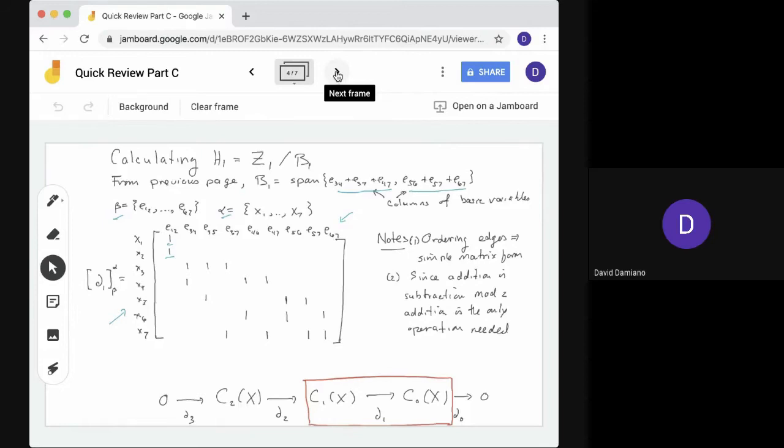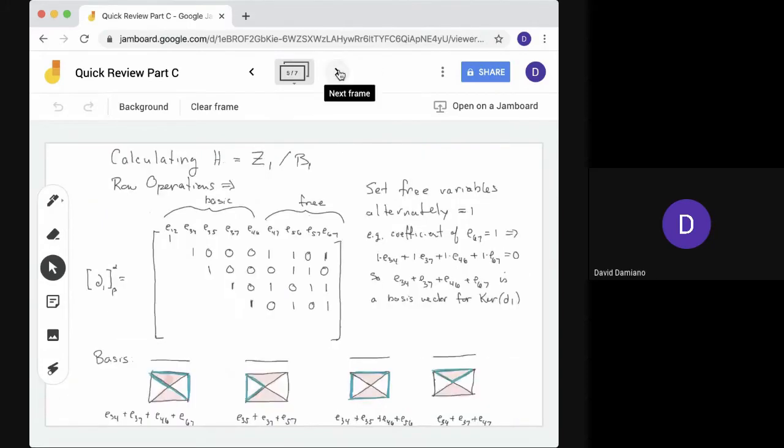Okay. Notice we chose the ordering of the edges in such a way that the matrix has a nice form. It basically has zeros in the lower left-hand corner, and zeros in the upper right-hand corner. The other thing to notice when we do row operations, since addition is subtraction mod 2, addition is the only algebraic operation we need when we compute the row echelon form. Okay. So let's write down the row echelon form.